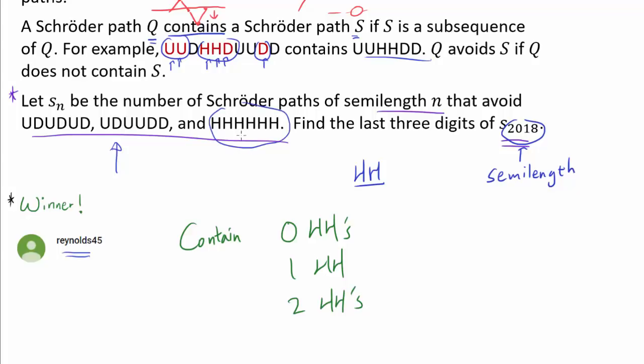Why is that? Well, that's not too hard, because we are trying to avoid HHHHHH. Once we have three HHs, obviously we have to contain HHHHHH inside. So we have one of these choices.